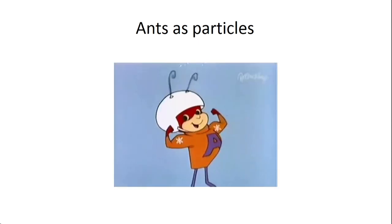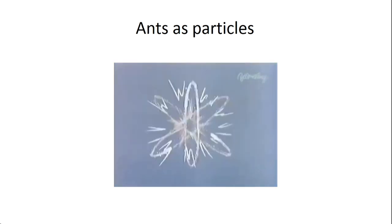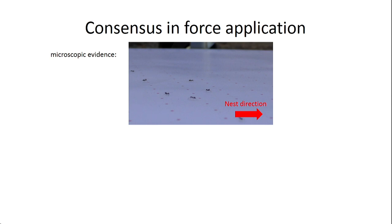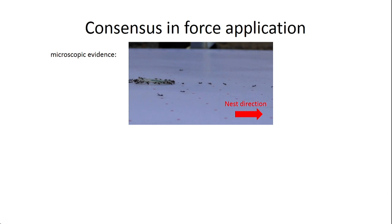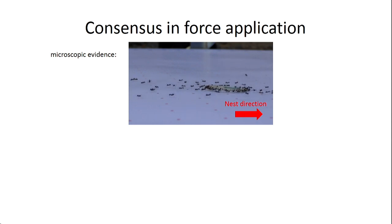We're going to try to look at the ants as particles and see how far we can go. First thing you need to do when you move a large object is you need some kind of consensus in the application of forces. Because if you carry something big together and each ant pulls in a different direction, you're not going to get too far. Here we can see some microscopic evidence for this. In a side view, you can see the object is tilted in one direction; the ants in the front are pulling while those in the back are lifting — some kind of order in the system.